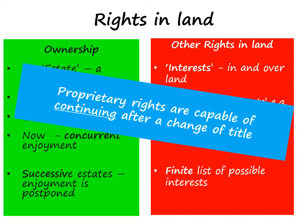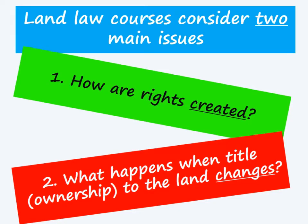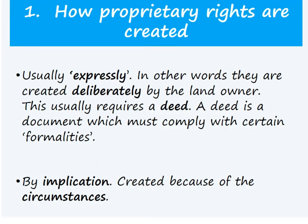Most land law courses consider two main issues. First of all, how are these rights in land created? And then secondly, what happens when title or ownership to the land changes? Let's briefly look at how proprietary rights are created. Usually they are created expressly, and that means they're created deliberately. Usually, in order to do this, you need a document which is known as a deed.